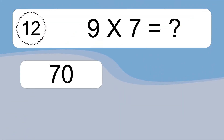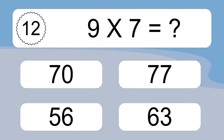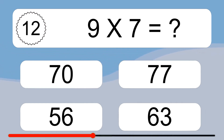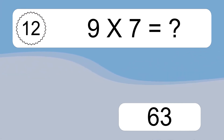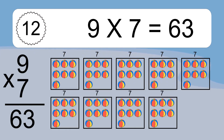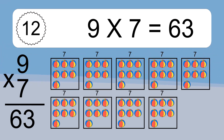9 times 7 equals what? 9 times 7 equals 63. We have 9 boxes, and each box has 7 colorful balls inside. If you count all the balls in all the boxes together, you will have 9 times 7 balls. This equals 63 balls.